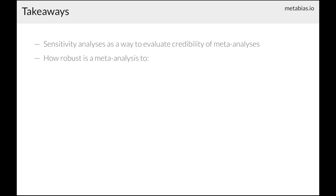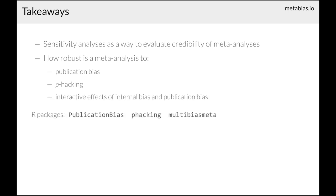To sum up, this tutorial has been about analyses that let you evaluate the credibility of a meta-analysis by determining how robust it is to across-study and within-study biases and their interaction. You can use the three R packages that I've talked about today to do these analyses — all three are available both on CRAN and on GitHub. You can go to metabias.io to conduct all these analyses on the web through the Shiny apps. Feel free to email me with any follow-up questions. Thank you for listening.